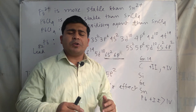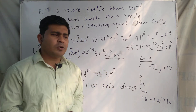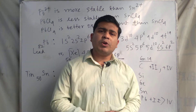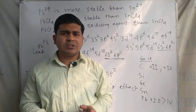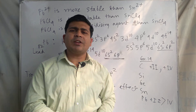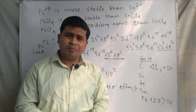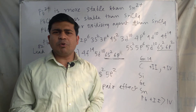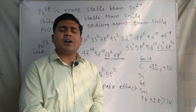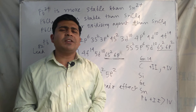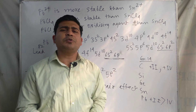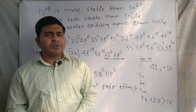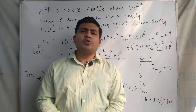The detailed reason for why the inert pair effect occurs will be discussed in a separate video. In this video, the key point is that the inert pair effect explains all three questions — why Pb²⁺ is more stable than Sn²⁺, why PbCl₄ is less stable than SnCl₄, and why PbCl₄ is a better oxidizing agent. If you have any questions, ask in the comment section below, and don't forget to subscribe and press the bell button for notifications.